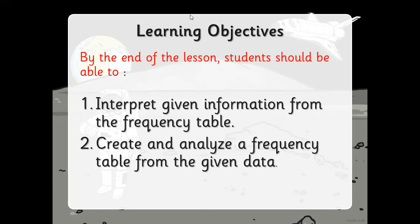Yesterday we learned a few new words: interpreting, data, tally charts, and tally marks. Interpreting is when we are trying to explain information that is stored in the form of a given table or chart — basically deducing or concluding information. For example, yesterday with the spring tally chart, we found out how many chicks there are — that is interpreting data.